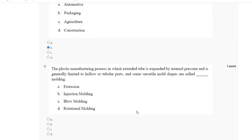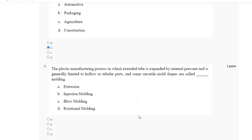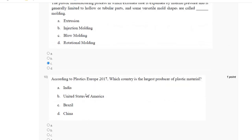Question number nine: the plastic manufacturing process in which an extruded tube is expanded by internal pressure, generally limited to hollow regular parts and some versatile mold shapes, is called dash molding. The correct answer for question number nine is blow molding.